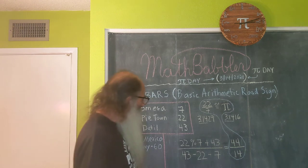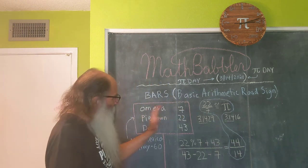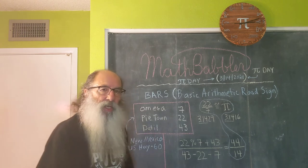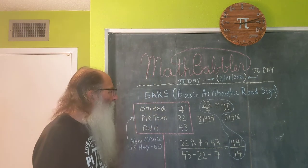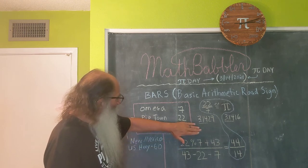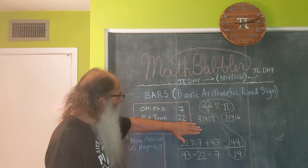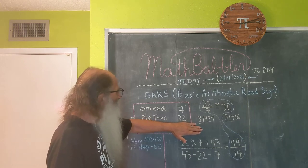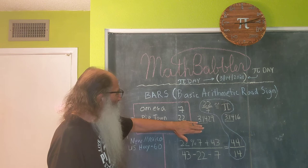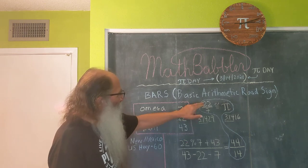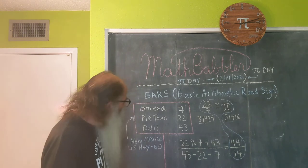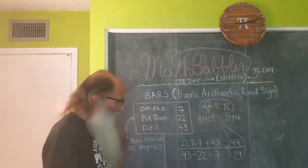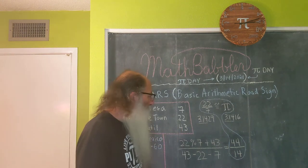The idea behind a basic arithmetic road sign is that you have to use every number in the sign, and you can use each number only once. If this road sign didn't have that dotted line in it, this would be a really good Pi sign because it has only two numbers — 22 and 7 — and we already know that 22 over 7 gives us a good approximation of Pi. But the dotted line is in there, so we have to accommodate it.